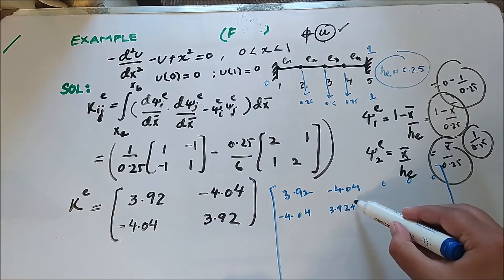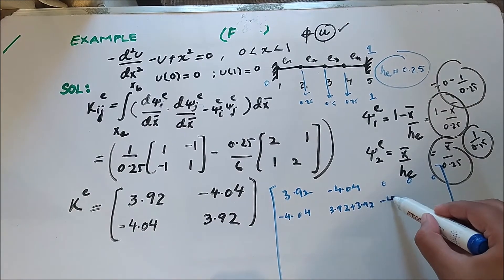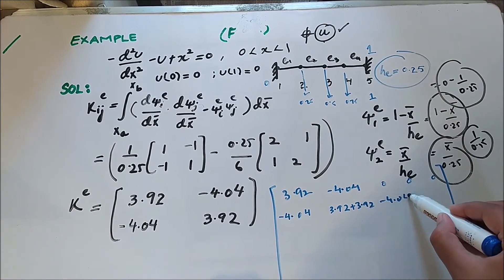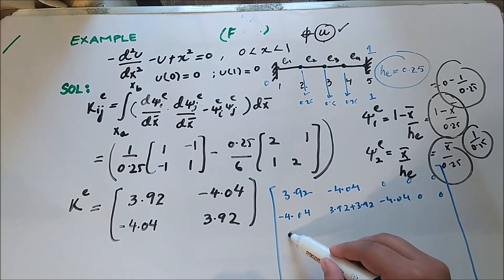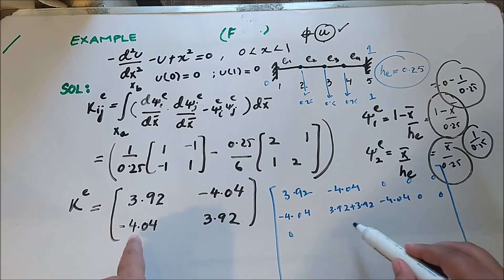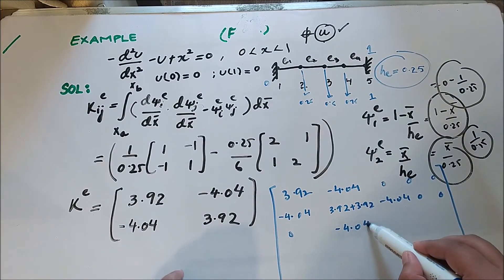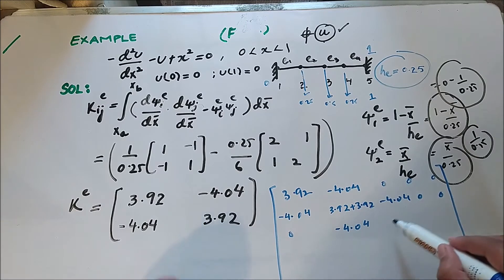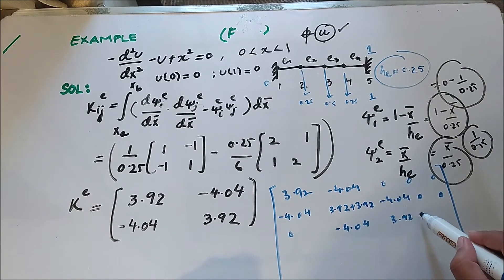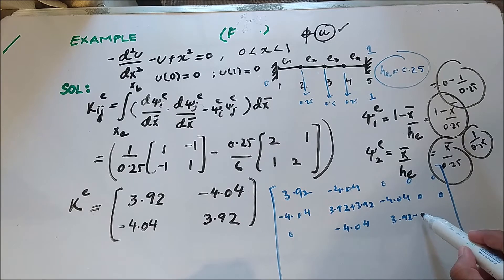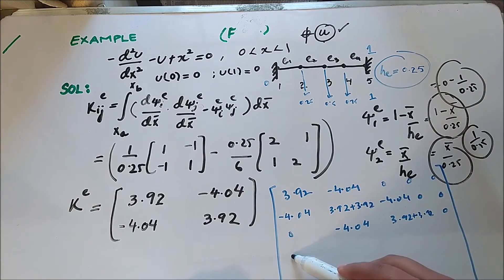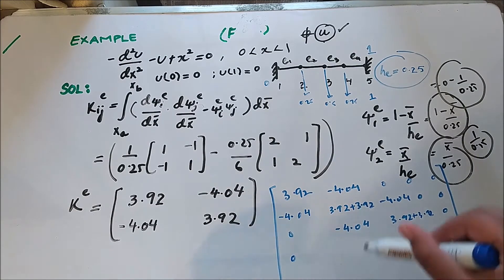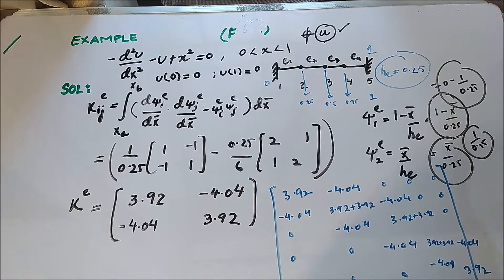The assembly repeats: 3.92, -4.04, 0, 0; then -4.04 with 3.92 again, then adding 3.92 again, and so on, until we end up with the complete global stiffness matrix.